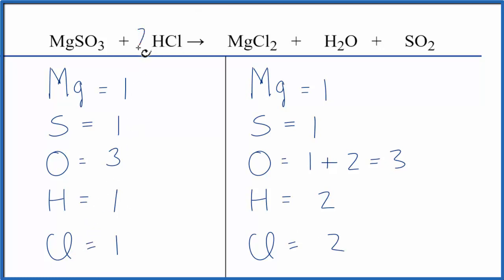They're together, so we can put a two in front of the HCl. The two applies to everything, so one hydrogen times two gives us two, and the hydrogens are balanced. Then one chlorine times two gives us two chlorine atoms, and we're done. This equation is balanced.